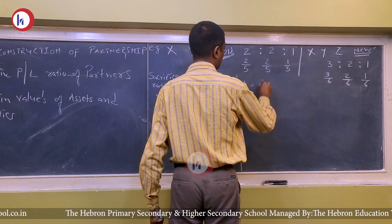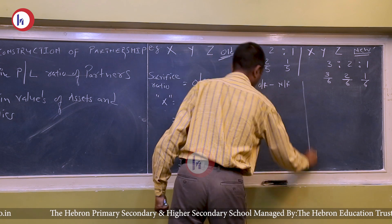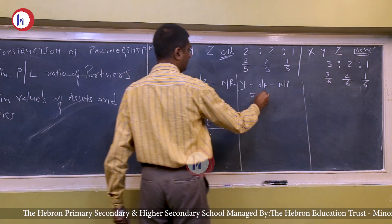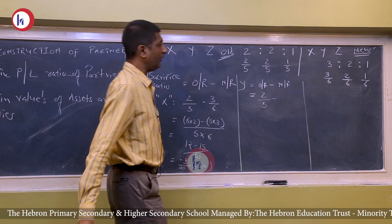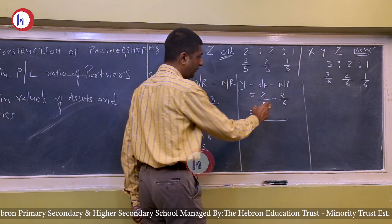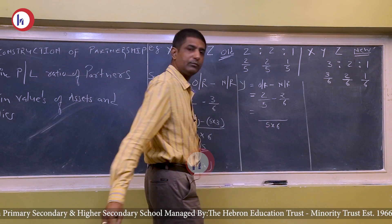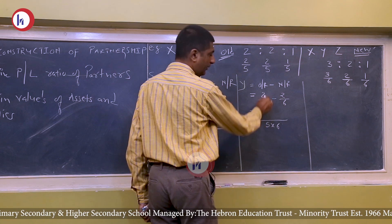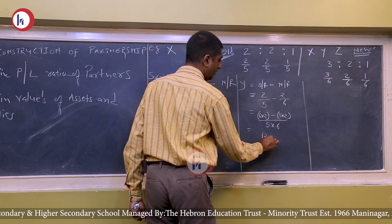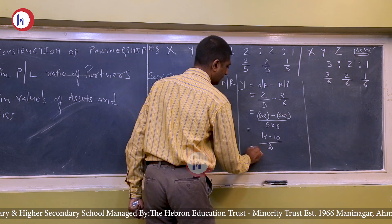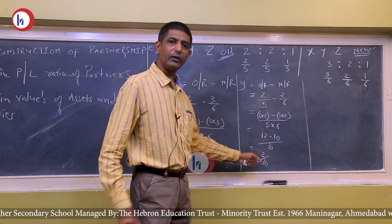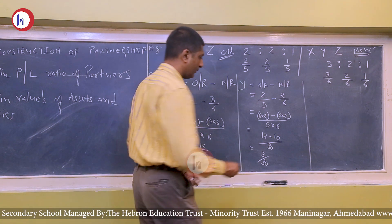Same formula for partner Y: Old ratio minus new ratio = 2/5 − 2/6. Multiplying the two denominators: (6×2 − 5×2) / 30 = (12−10)/30 = 2/30. We adopted the sacrifice ratio formula and the answer is positive, so it is a sacrifice. Y has sacrificed 2/30.